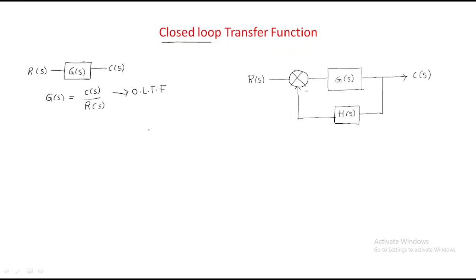Now we need to discuss the closed-loop transfer function. Again, the input is R(s) and we get an output, but the system consists of a closed loop. If the system has a feedback gain, it is called a closed-loop system. Here H(s) is called the feedback gain or feedback transfer function.